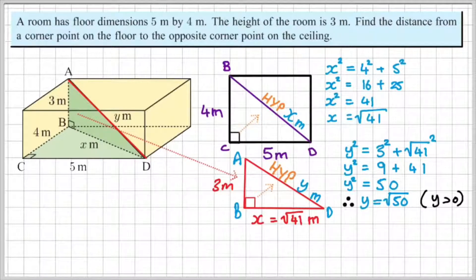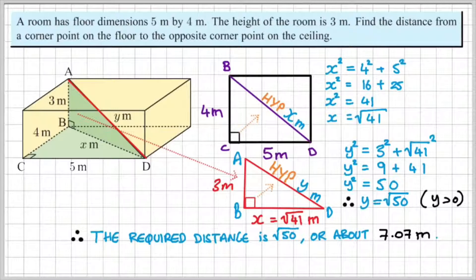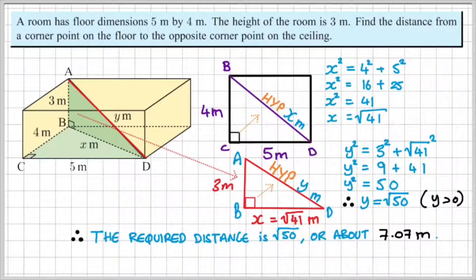So in order to complete the question, we should write a statement like this. Therefore, the required distance is the root of 50, or about 7.07 meters.